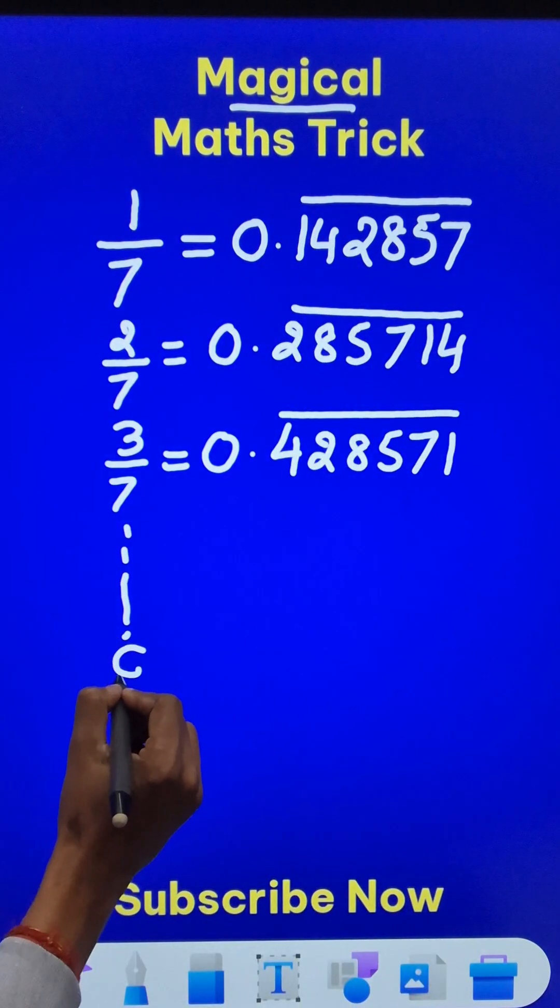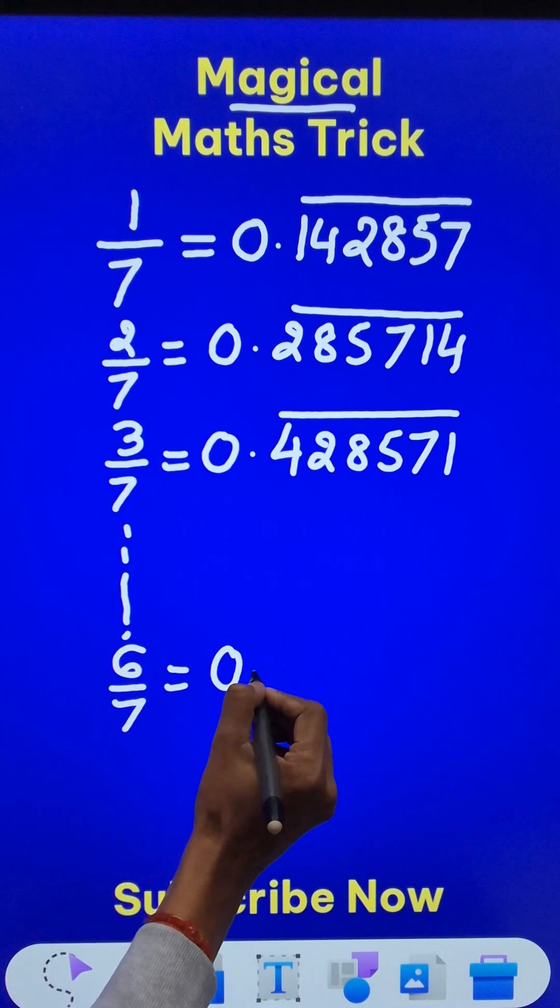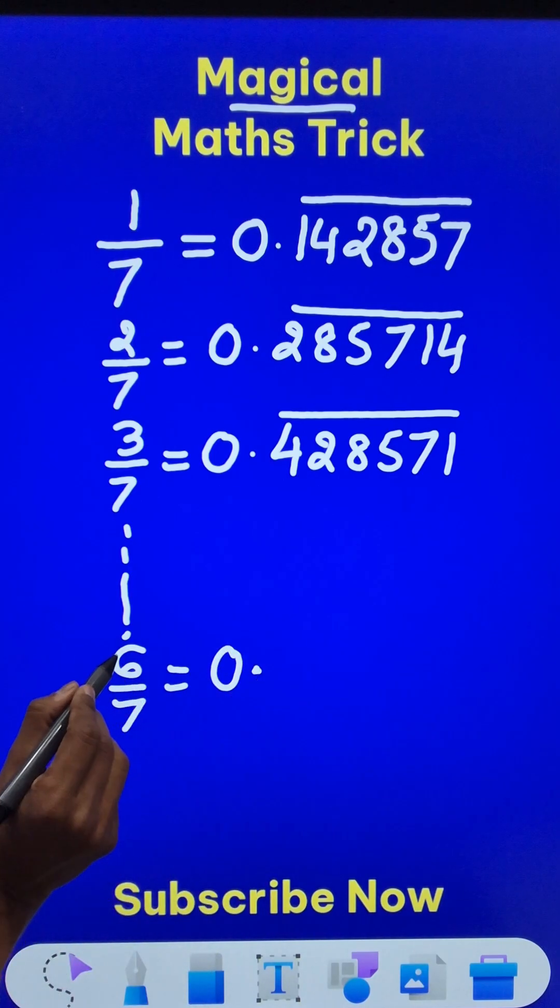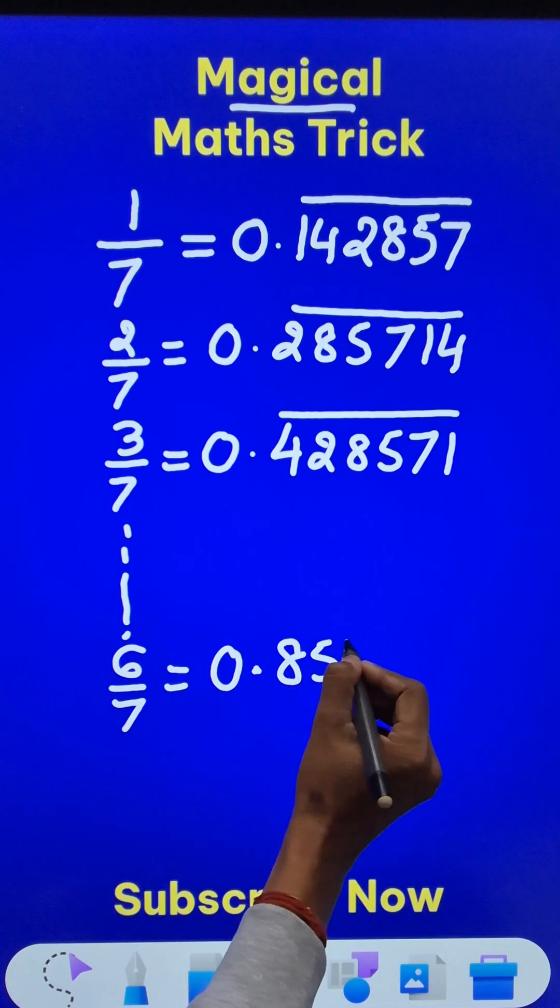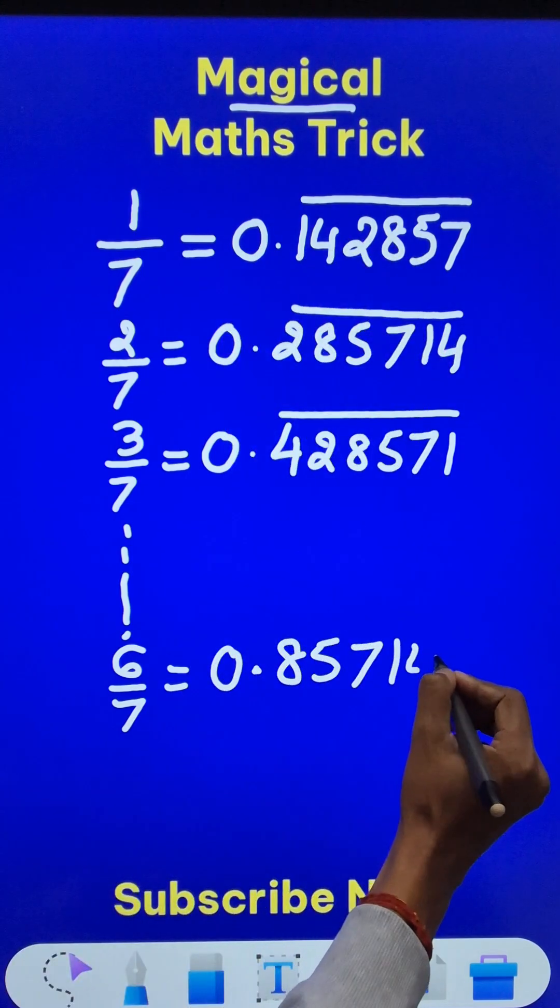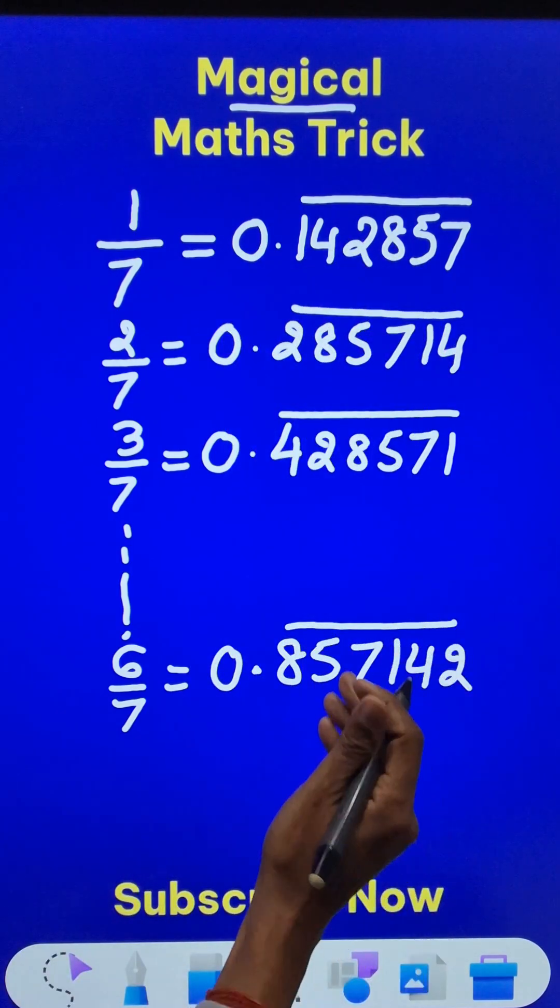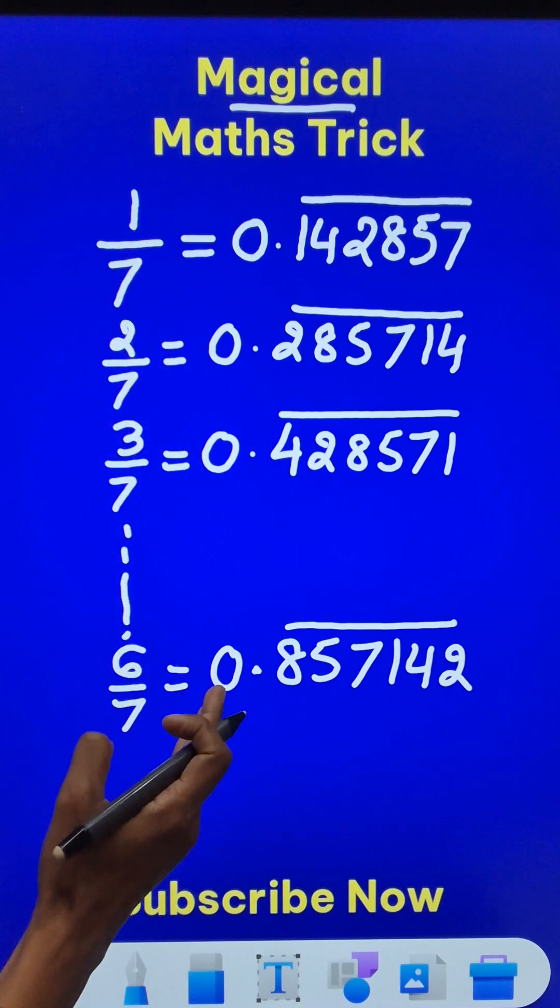This will go on up to 6 upon 7, which is 0 point. Now 60 divided by 7—7 times 8 is 56—so start with the 8: 8, 5, 7, and then come back 1, 4, 2. These 6 digits are going to repeat over and over again.